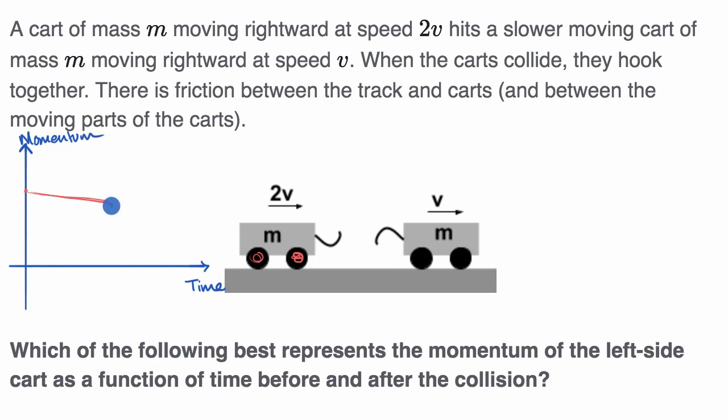One way to think about it is some of that momentum will get transferred to the slower moving cart, because then they're going to be moving together at the same velocity. At that slower velocity, it will continue to decelerate because of the friction. So the graph of momentum over time of the left cart might look something like that.